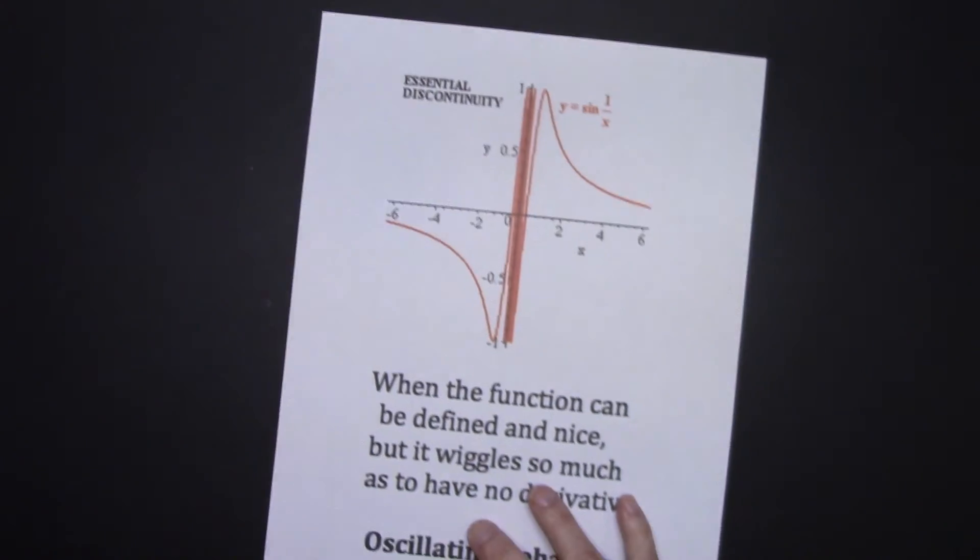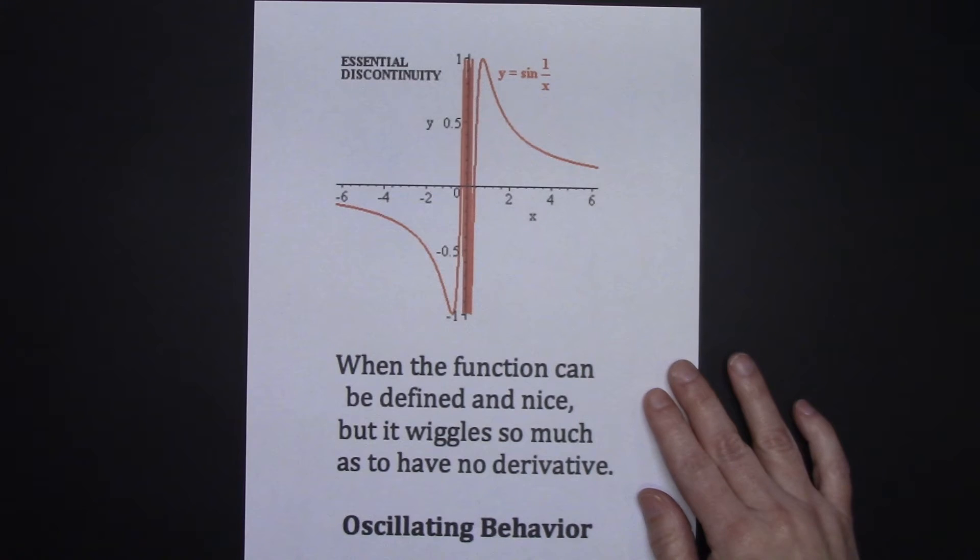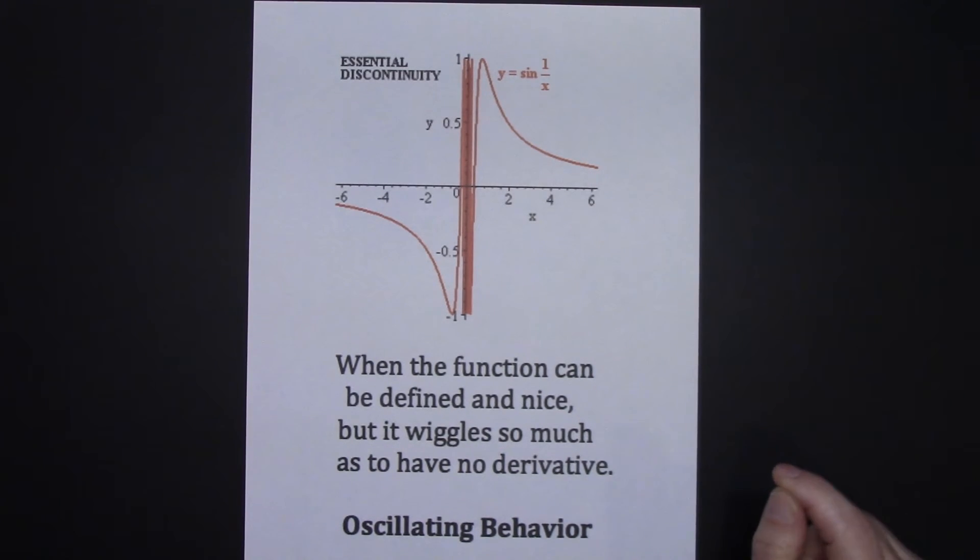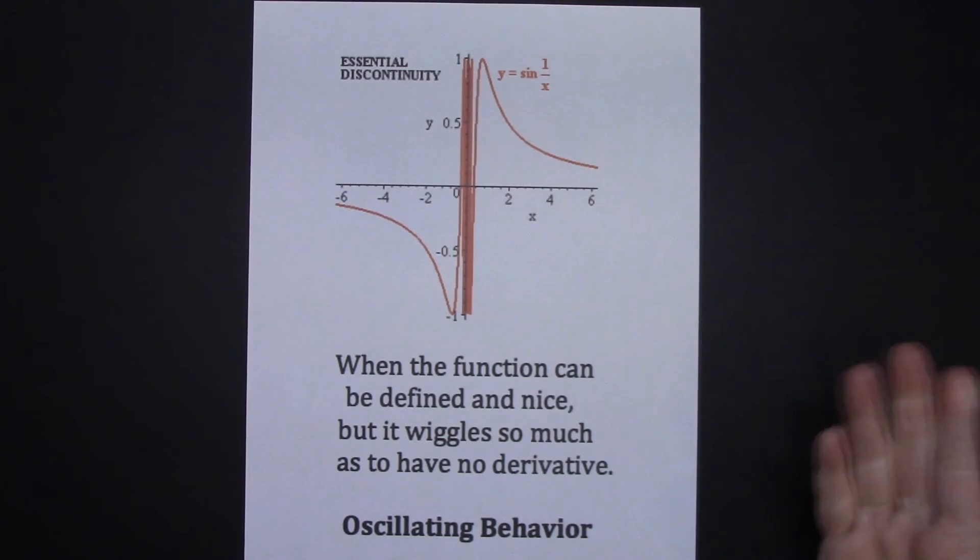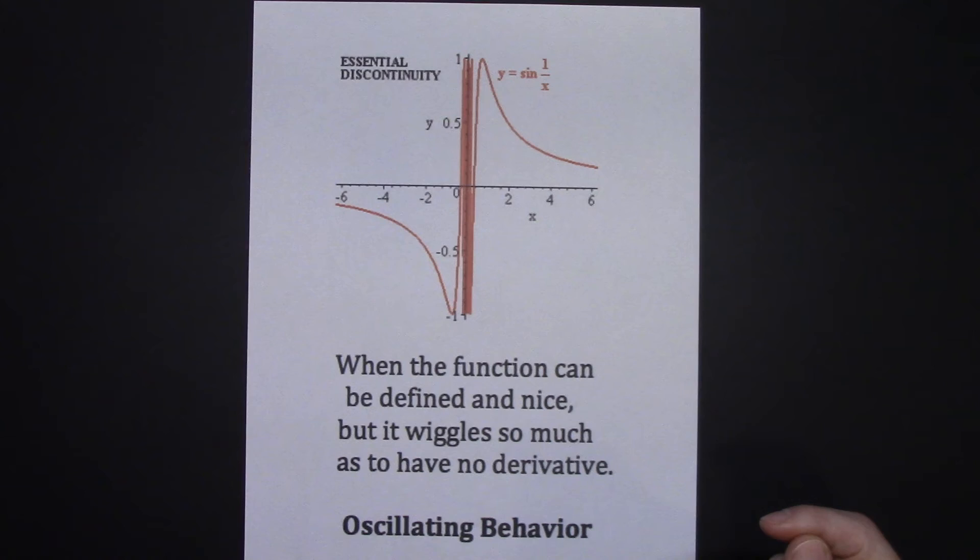And in the last example, we have an example of oscillating behavior. When the function can be defined and is a nicely defined function, but it just wiggles so much, then it has no derivative.